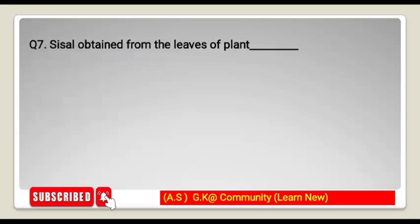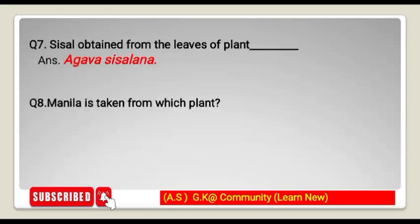Next question: sisal is obtained from the leaves of which plant? The plant is Agave sisalana. Next question: manila is taken from which plant? Manila is taken from the abaca plant.